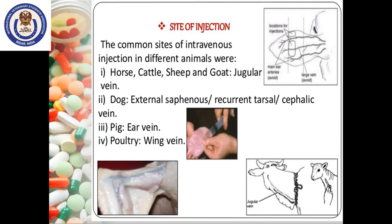Sites of injection: The common sites of intravenous injection in different animals are — in horse, cattle, sheep and goat, the jugular vein is preferred. In dog, the external saphenous, recurrent tarsal or cephalic vein is preferred. In pigs, the drug is administered through ear veins. In poultry, the drug is injected into the wing vein.